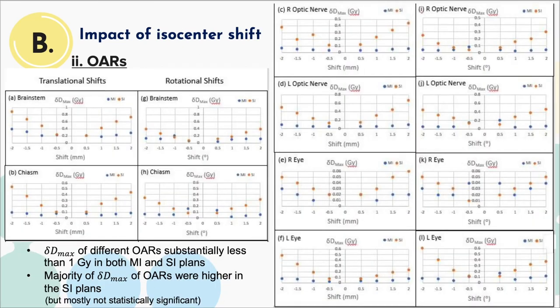For the OARs, the impact of all shifts was relatively mild, with change of Dmax substantially less than 1 gray in both MI and SI plans. There is no definite pattern that any of the treatment approaches would be favored for OAR sparing.